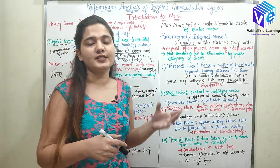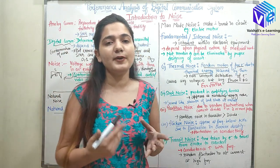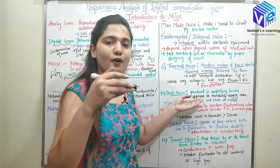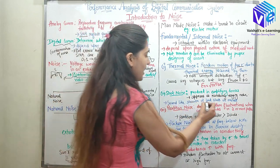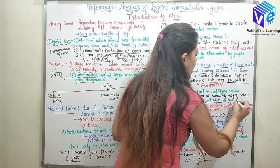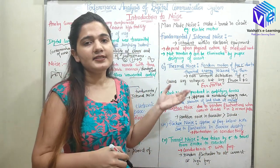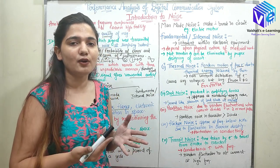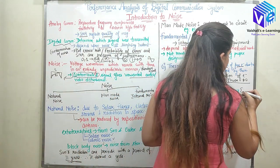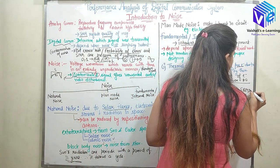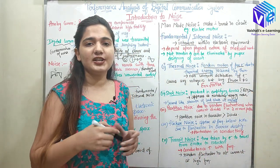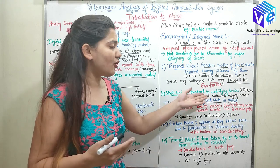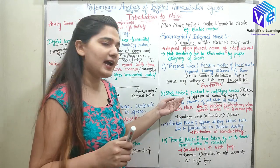Shot noise is named because when it is generated, it produces a sound like a shower of lead shots on metal. It is produced in amplifying devices such as BJTs and diodes. Whenever you turn on a BJT or diode and hear a sound similar to lead shots falling on metal, that is classified as shot noise.